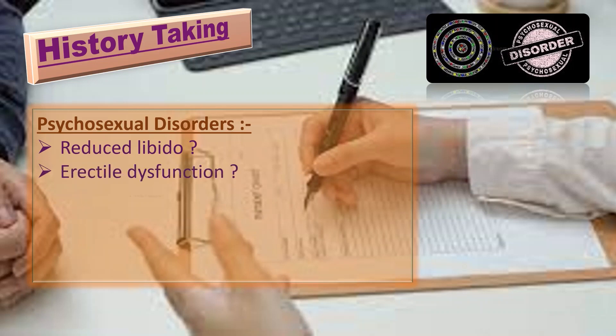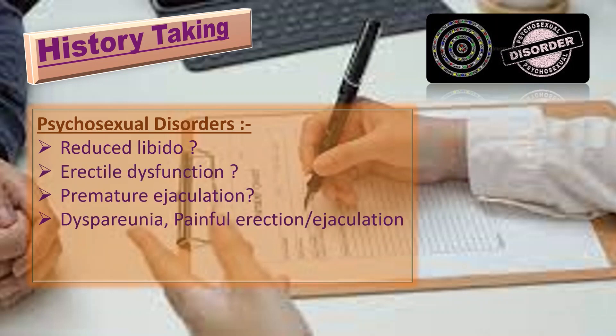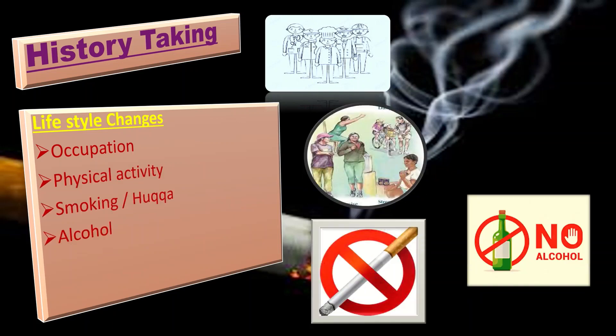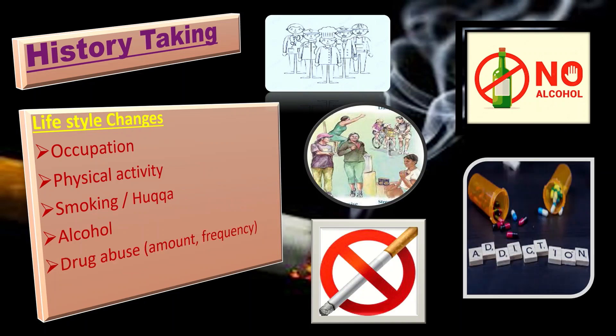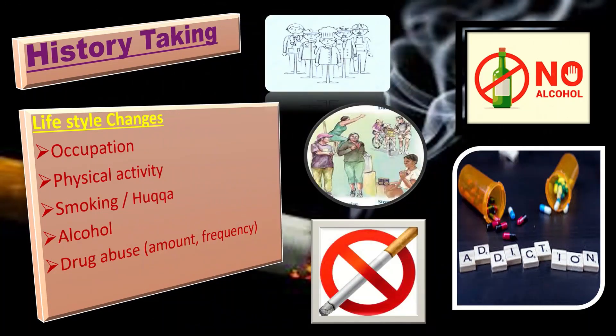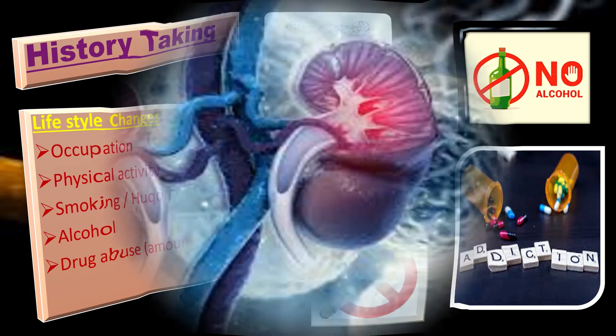Questions about psychosexual disorders include: reduced libido, erectile dysfunction, premature ejaculation, dyspareunia, painful erection or ejaculation, fatigue, and previous sexual relationships. Next come lifestyle changes — ask questions about occupation, physical activity, smoking or hookah use, alcohol, and drug abuse, including the amount and frequency of drug use.